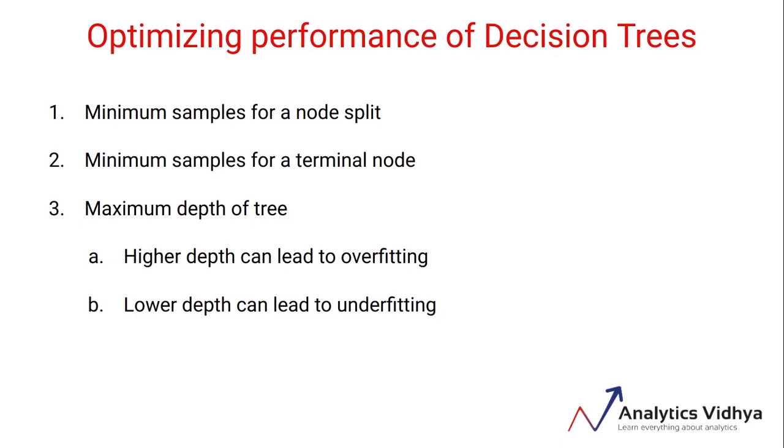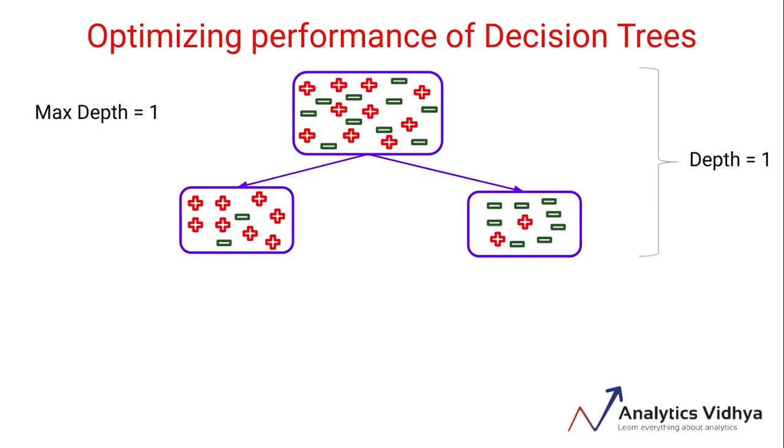If you set a higher max depth, it can lead to overfitting, whereas setting the max depth too low will lead to underfitting. You can intuitively imagine how that will work. When we set the max depth here as 1, the model will not learn many patterns and there's a good chance it might underfit. So depending on the problem, you can set the max depth to prevent overfitting or underfitting.